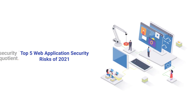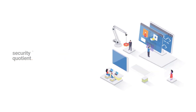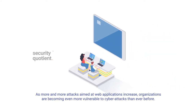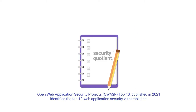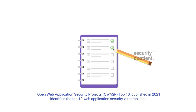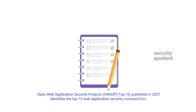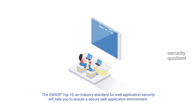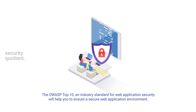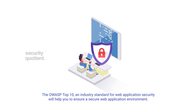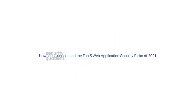Top 5 Web Application Security Risks of 2021. As more and more attacks aimed at web applications increase, organizations are becoming even more vulnerable to cyber attacks than ever before. Open Web Application Security Project's Top 10, published in 2021, identifies the top 10 web application security vulnerabilities. The OWASP Top 10, an industry standard for web application security, will help you ensure a secure web application environment. Now let us understand the Top 5 Web Application Security Risks of 2021.